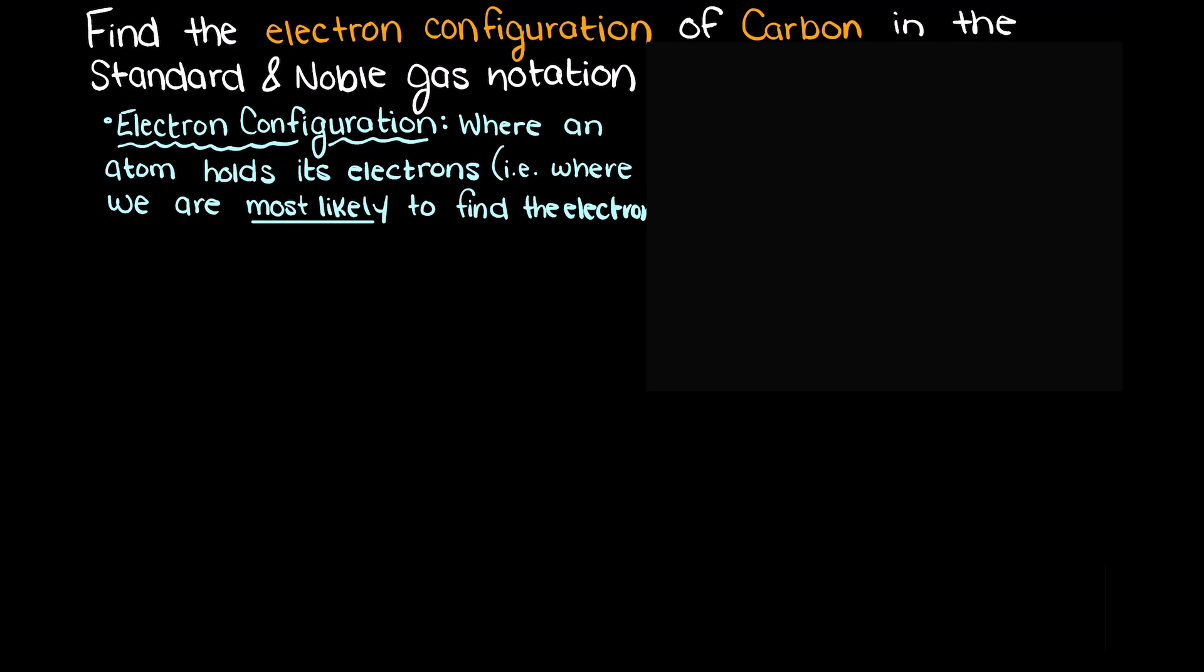To solve this, the first thing we need to do is look at our periodic table and see how many electrons our carbon atom actually has in its ground or unexcited state.